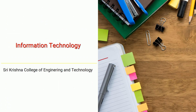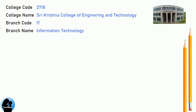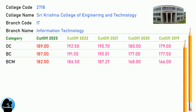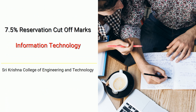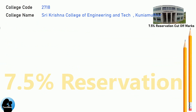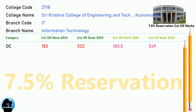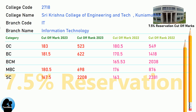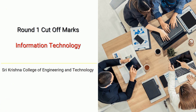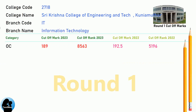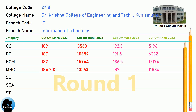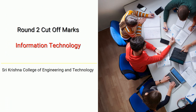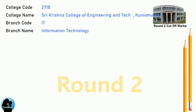DNEA Cut-Off for Shri Krishna College of Engineering and Technology in Information Technology. DNEA 7.5 Reservation Cut-Off. DNEA Round 1 Cut-Off. DNEA Round 2 Cut-Off for Shri Krishna College of Engineering and Technology in Information Technology.